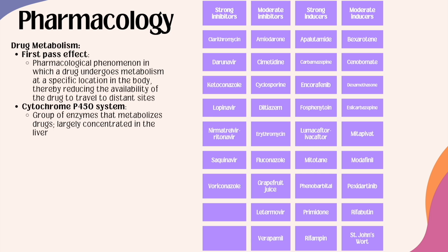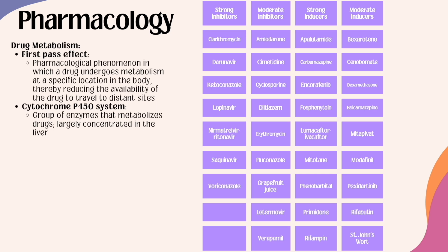Under moderate inhibitors and moderate inducers, there are a couple of important agents you should be familiar with. Grapefruit juice is considered to be a moderate inhibitor, and St. John's Wort is considered to be a moderate inducer. Hence, why we are always asking about our patients' intake of these — because if they are taking medications that use the CYP450 system for metabolism, there can be complications.